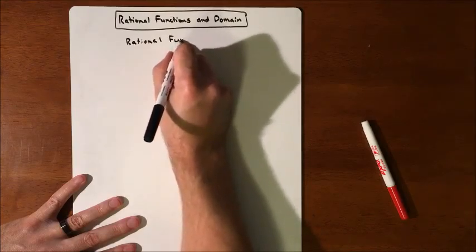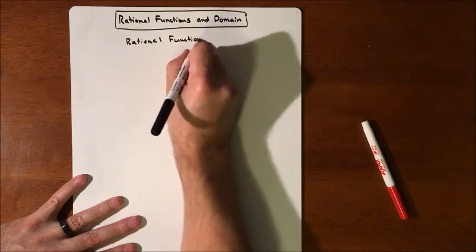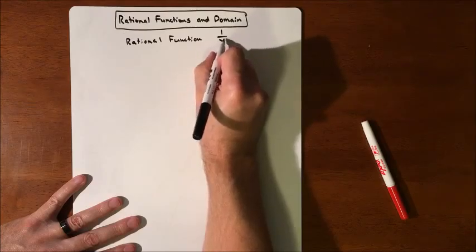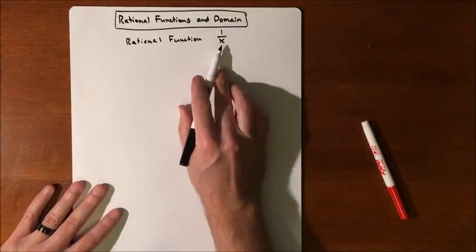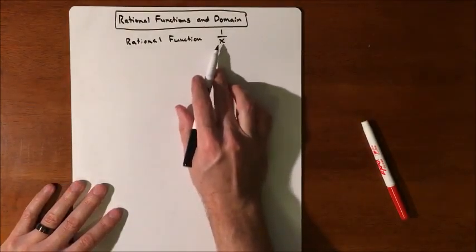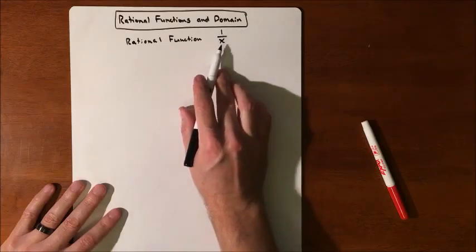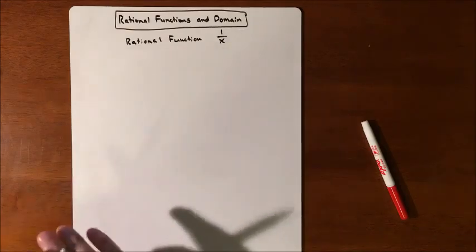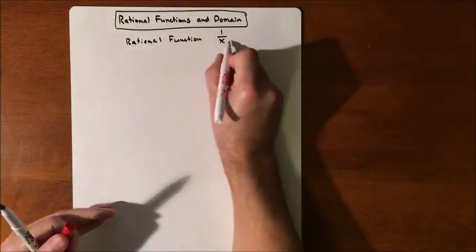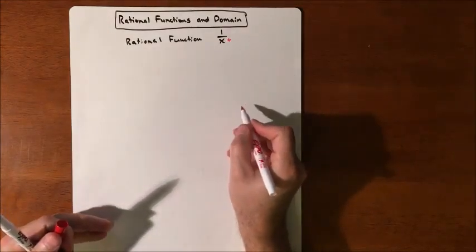When we talk about a rational function, we are looking at something where our variable is in the denominator. And it can be a lot more complicated than that. We could have variables in the numerator, we could have variables in the denominator, but that one's the key. So that is where the rational part comes from.